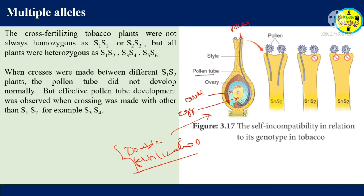In the stigma and style, the flower's vegetative parts are diploid — they carry two alleles. So a plant carrying S1S2 alleles will have S1S2 in the stigma. Now let's look at conditions one, two, and three.